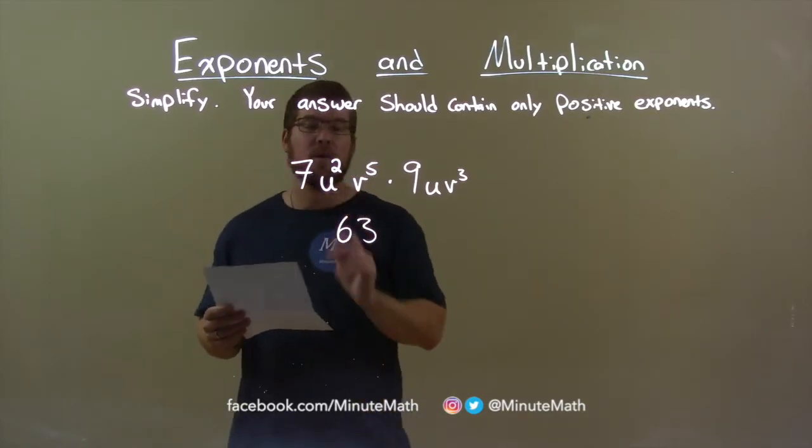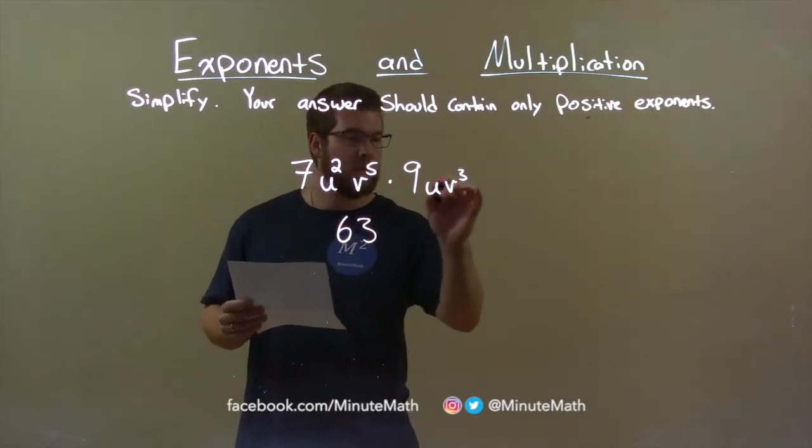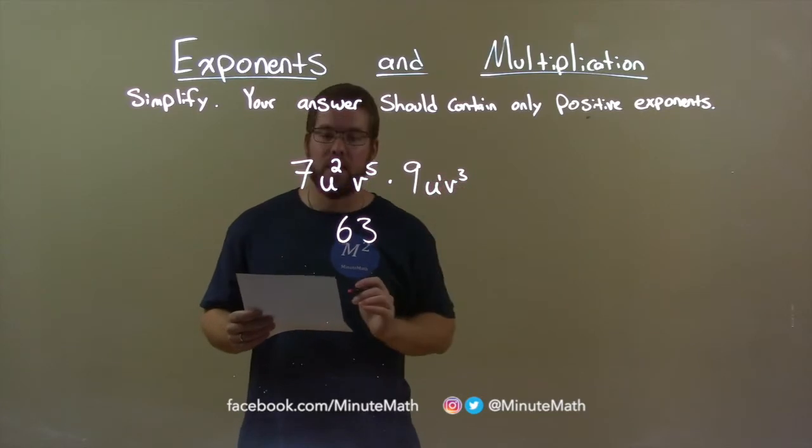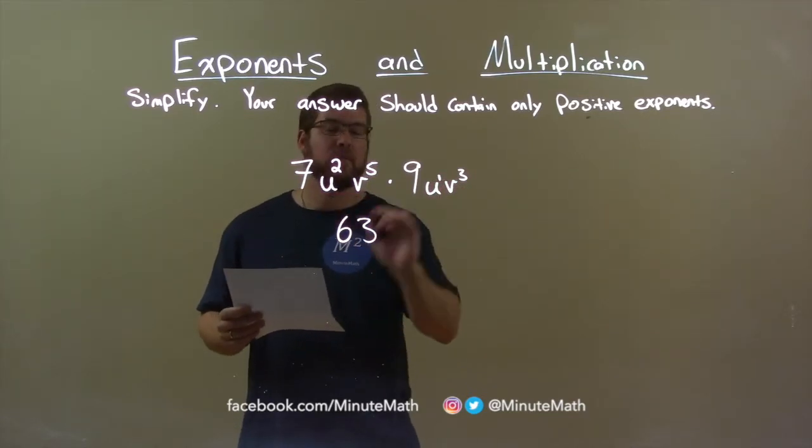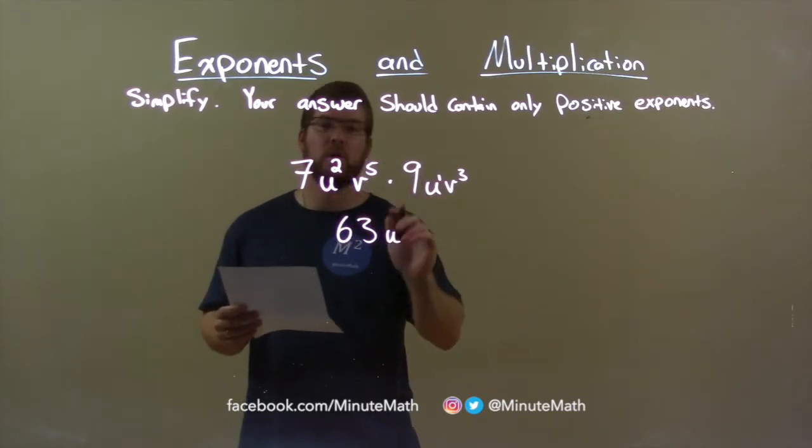Next, I look at my variables. First variable I see is a u and we have a u here and a u there. But the second one, right, when there's no exponent, we know it's to the first power. When we multiply variables at the same base, we add the exponents. So u squared times u to the first is u to the 2 plus 1 which is 3.